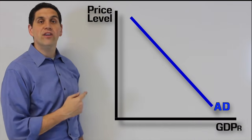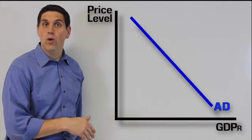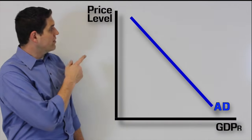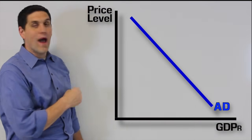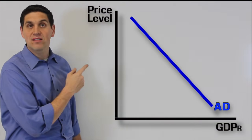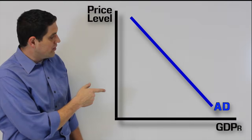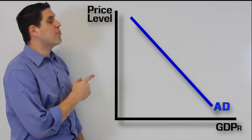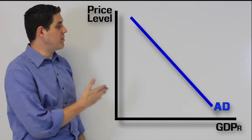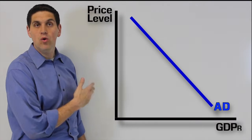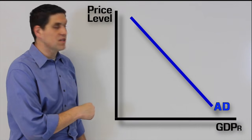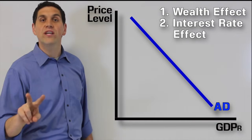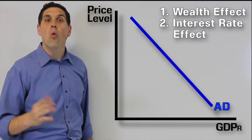Now let's take a look at the graph. As you can see, the aggregate demand is downward sloping. On the y-axis we have price level, and on the x-axis we have real GDP. At a high price level, the quantity demanded is very low. At a low price level, the quantity demanded is very high. There are two reasons for this.